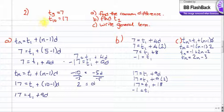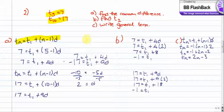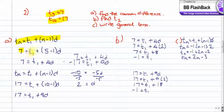Let's move on to our second question, which is a little more complicated. All this question tells us is that term 5 is 7 and term 10 is 17. Part A asks us to find the common difference. We start with our formula: T of N equals T1 plus N minus 1 times D. For the first equation, term 5 is 7, so we get 7 equals T1 plus 4D.